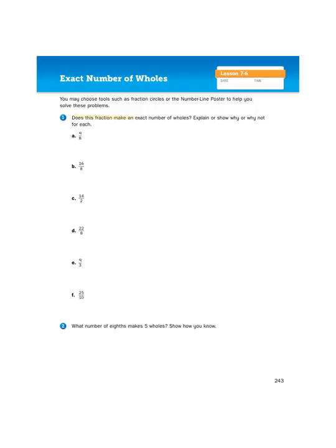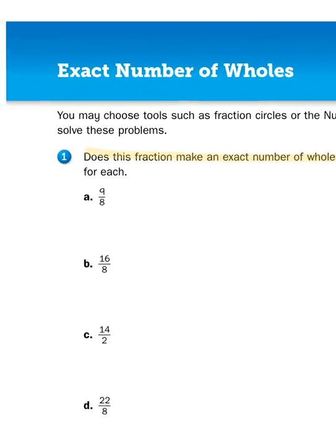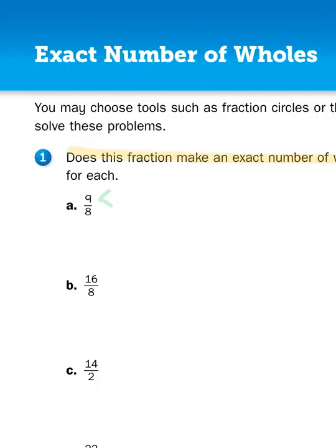Does this fraction make an exact number of wholes? So the first thing we need to do is look at each of these fractions, and I notice that each of these fractions for number one are improper. That means that the numerator is larger than the denominator, so that means I have more than what is required to make one whole.